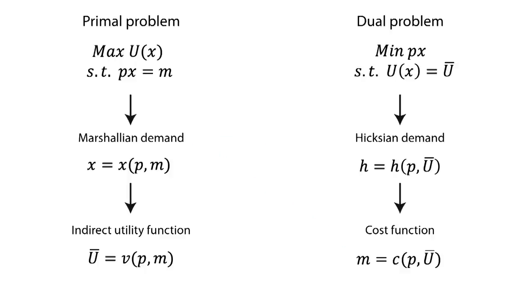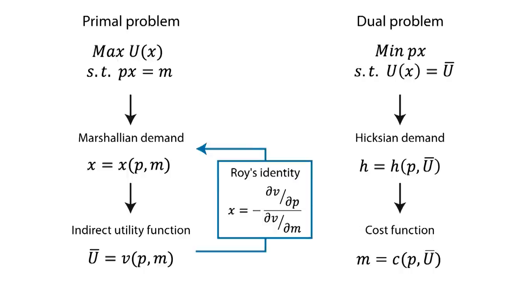We can also work backwards from the indirect objective functions to get the Marshallian and Hicksian demand functions. By differentiating the indirect utility function with respect to p, while holding utility constant, and rearranging, we get Roy's identity, which can be used to obtain the Marshallian demand function from the indirect utility function.